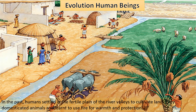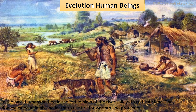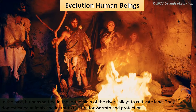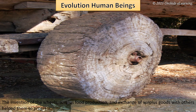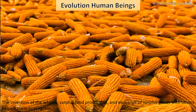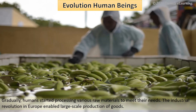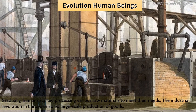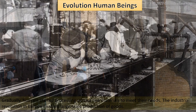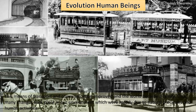In the past, humans settled in the fertile plains of the river valleys to cultivate land. They domesticated animals and learned to use fire for warmth and protection. The invention of the wheel, surplus food production, and exchange of surplus goods with others helped them to progress. Gradually, humans started processing various raw materials to meet their needs. The industrial revolution in Europe enabled large-scale production of goods. Means of transport and communication improved and the world became a family.